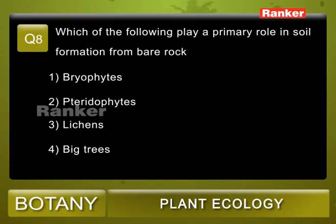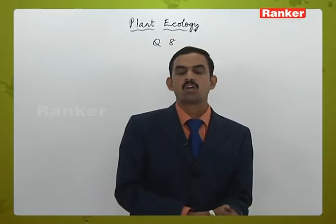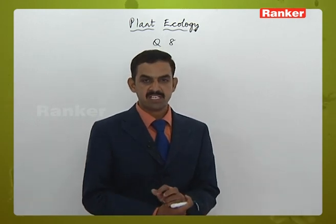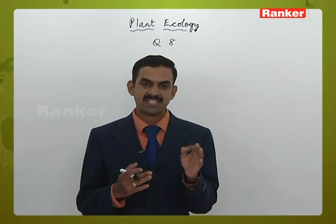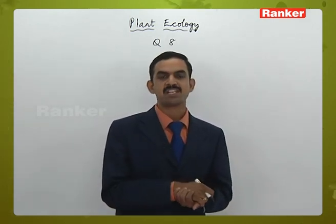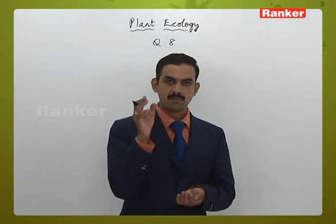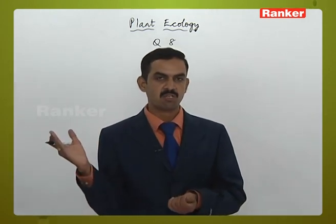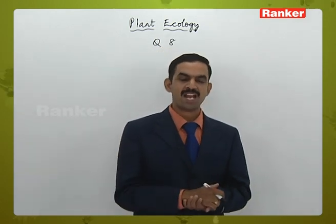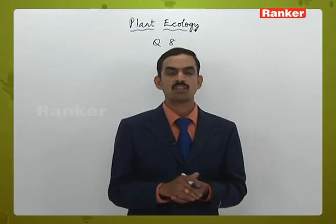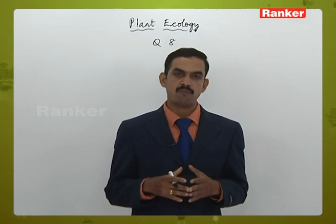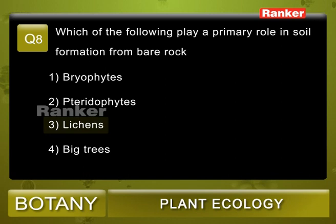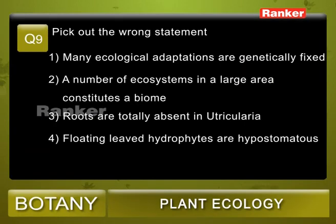Question 8: Which of the following plays a primary role in soil formation from bare rock? Options: 1) bryophytes, 2) pteridophytes, 3) lichens, 4) big trees. The pioneers of ecological succession colonize bare rock and convert it into soil. After lichens, bryophytes colonize, then pteridophytes, and finally trees as the climax community. Lichens are the ones that colonize bare rock first and make the soil fertile. Correct answer: 3.